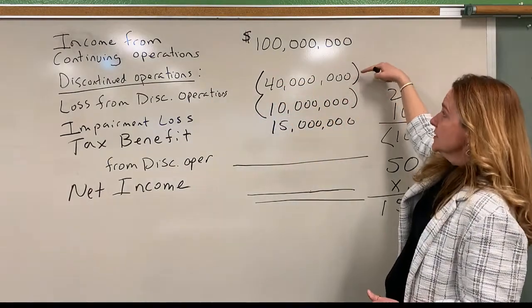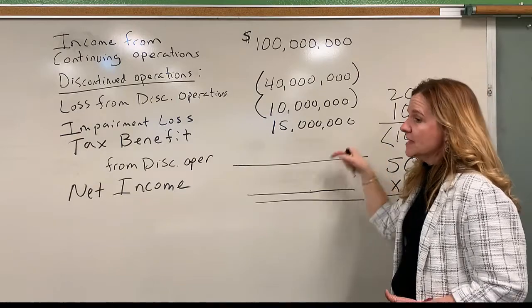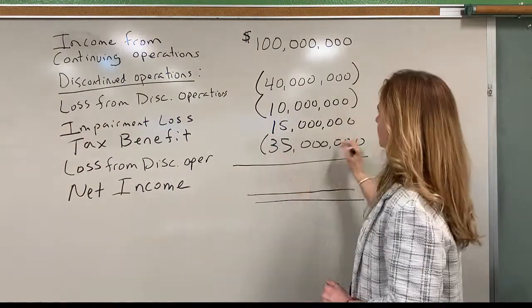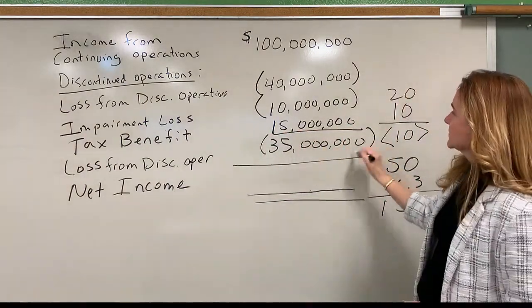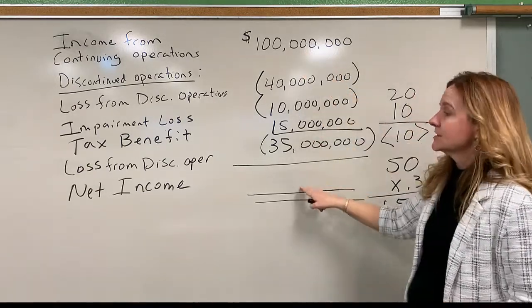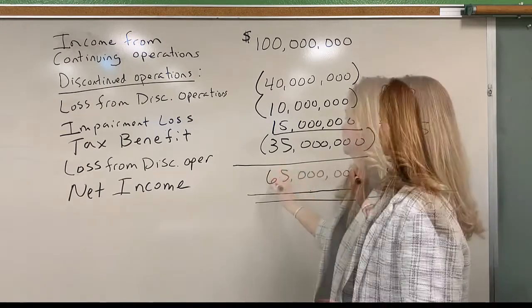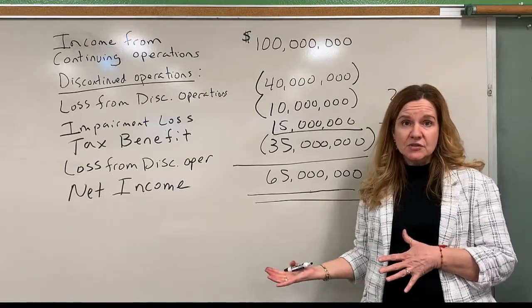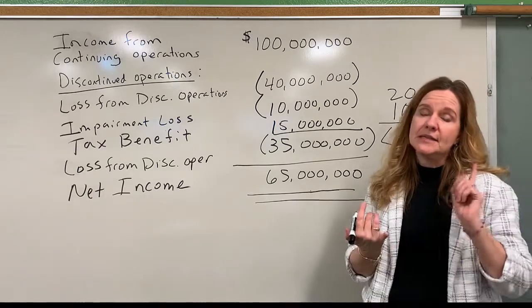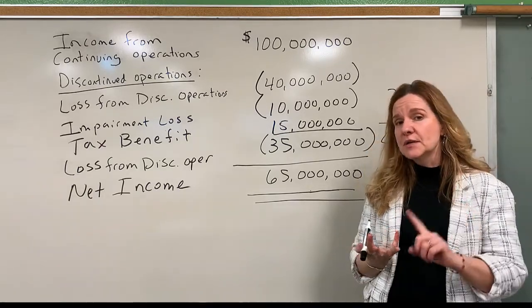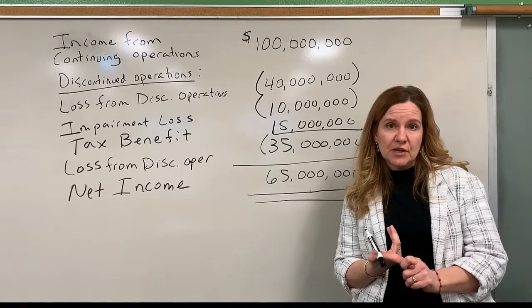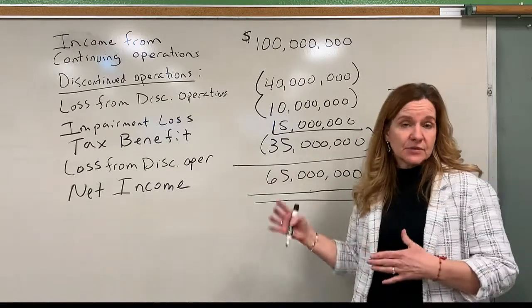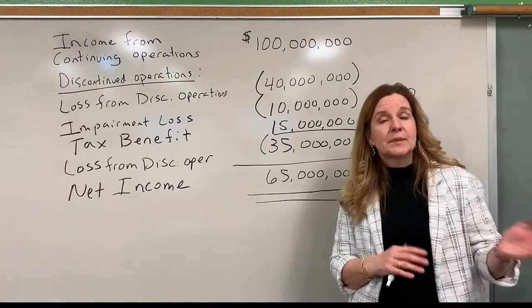Combining the three items — negative $40 million, negative $10 million, plus $15 million tax benefit — gives a loss from discontinued operations of $35 million. Combining that with income from continuing operations gives net income of $65 million. We also must disclose the discontinued operation, explaining the assets being disposed, the revenue and expense streams, and the reason for discontinuing. On the balance sheet, the assets of the segment being disposed are recorded in the current asset section because we plan to sell it next year.